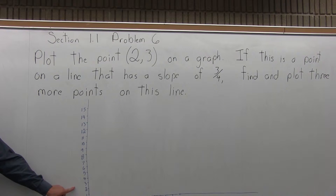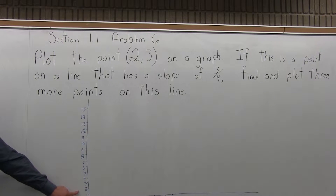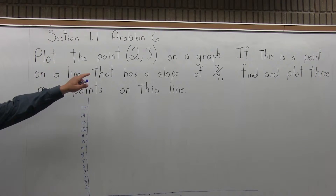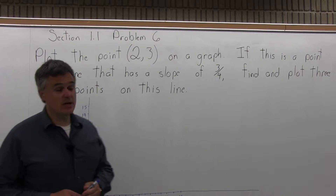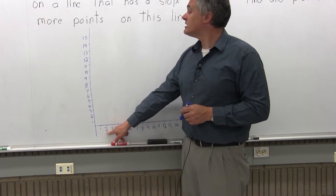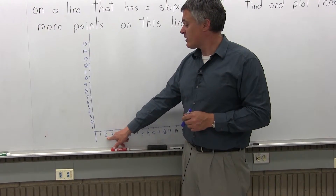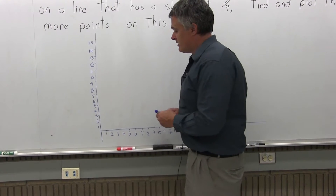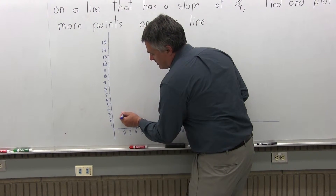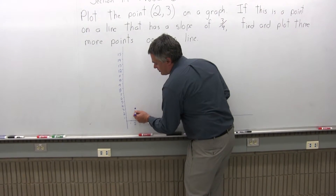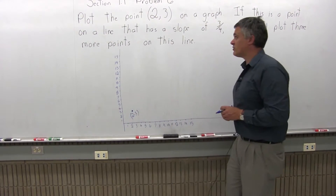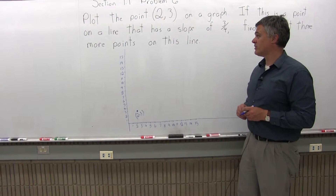I've already started the graph and numbered it out. We'll start by putting the given point (2, 3) on the graph. The 2 comes first — it's the x-coordinate. Starting from the origin, we go over 2. The 3 is second — it's the y-coordinate. We go up 3. So going over 2 and up 3, there's my point (2, 3).